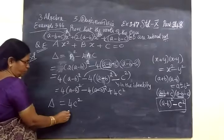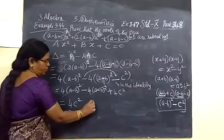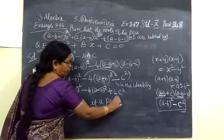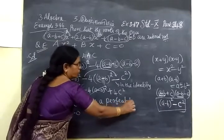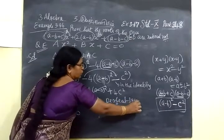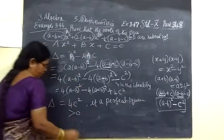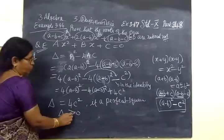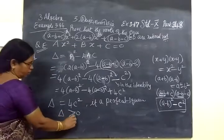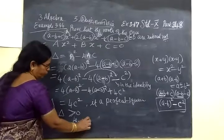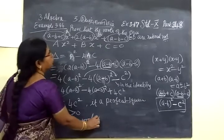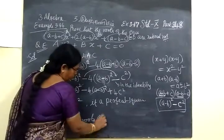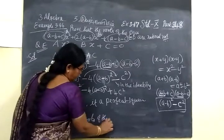So delta equals 4C square. This is greater than zero. It is a perfect square number. Since delta is greater than zero, the roots of the equation are rational numbers.